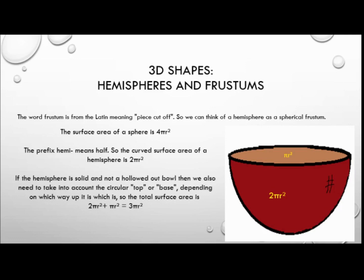Now if the hemisphere is a solid and not a hollowed out bowl, then we also need to take into account the circular top, or base depending on which way up it is. So the total surface area is 2πr² plus πr², which is the area of the circular base or top. 2 plus 1 is 3, so the total surface area is 3πr².